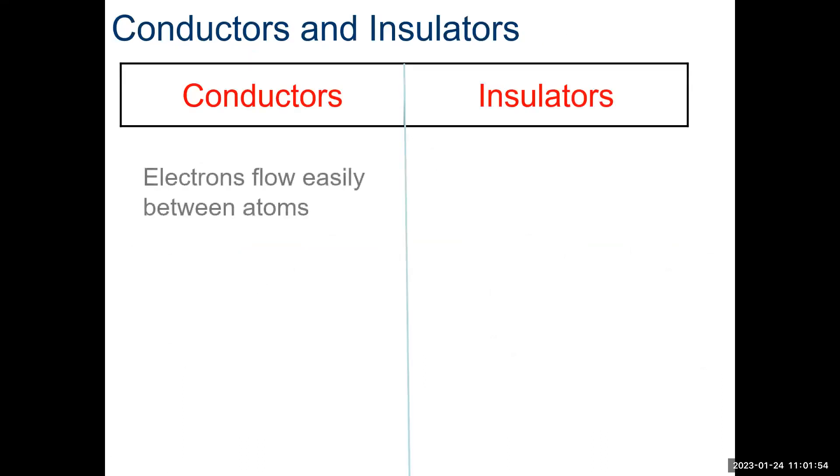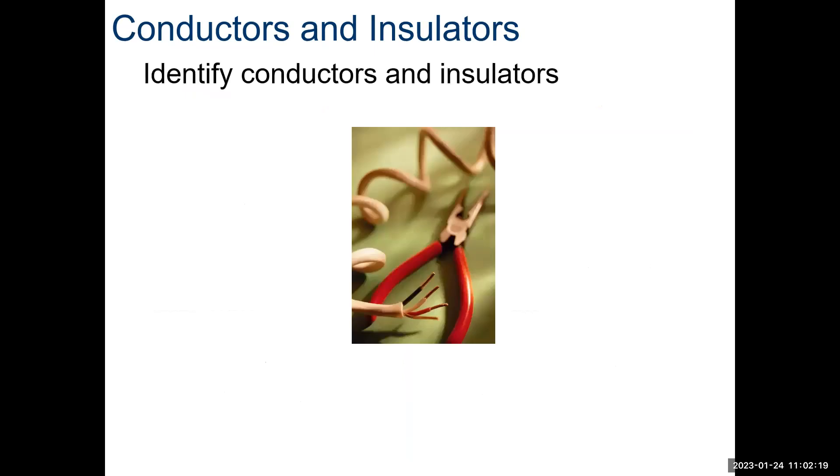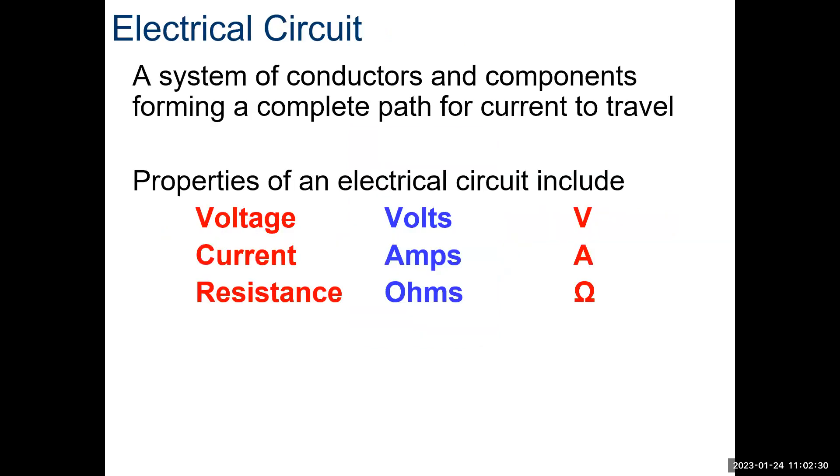All right. Conductors and insulators. Electrons flow easily between atoms, and it's difficult between atoms. One to three valence electrons in the outer orbit are conductors. Five and eight, insulators. There's our very common ones. All right. Very good. Just cruising through, letting you see those. I don't need to talk you through that.